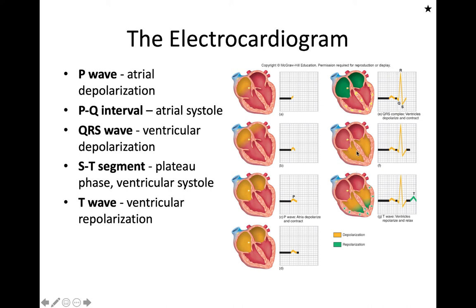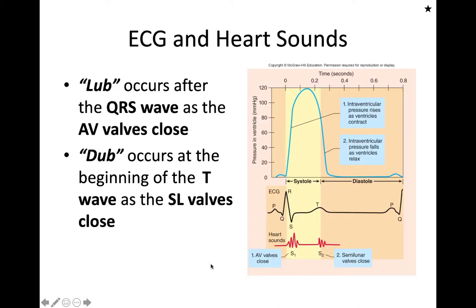The QRS segment is due to ventricular depolarization, and it starts at the apex and spreads upward. Then we get repolarization, shown in green again, starting at the apex and spreading upward — that's your T wave. You can see these different segments and how they correspond to each other.